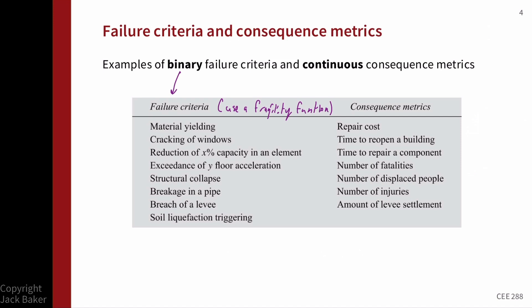On the right-hand side, we have continuous metrics. Repair cost is an easy example — it can range from zero up to the price of replacing the asset. Time is another continuous metric: time to reopen, time to repair. Fatalities, displaced people, and injuries are countable quantities; though they're integer-valued, we would use a continuous consequence function. You could also describe the amount of levee settlement or capacity reduction as continuous. When we've got these continuous metrics, we use a vulnerability function. That covers the basic definitions and context — next we'll go into more detail on quantifying and defining fragility and vulnerability functions.